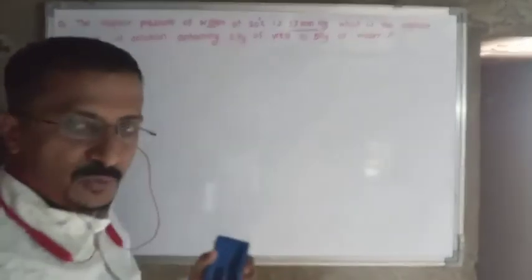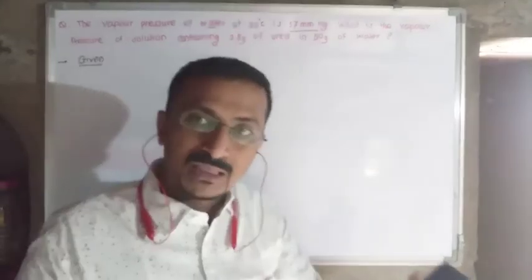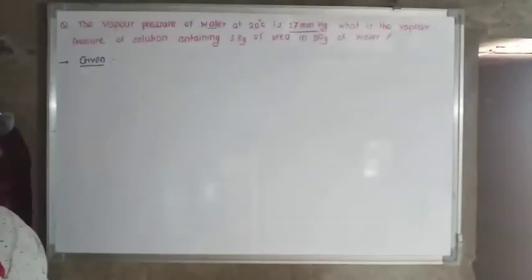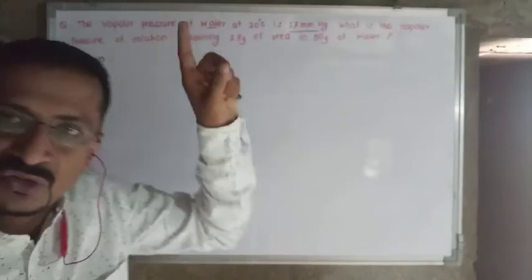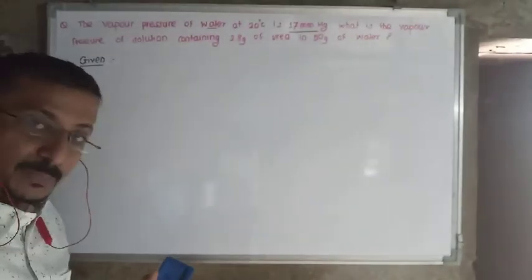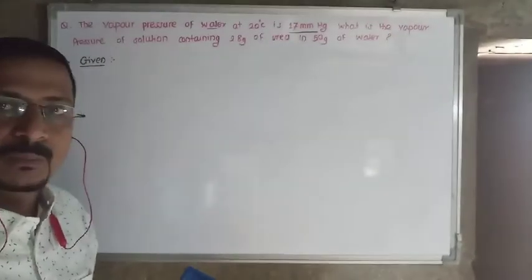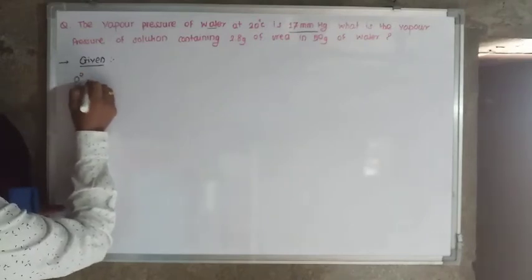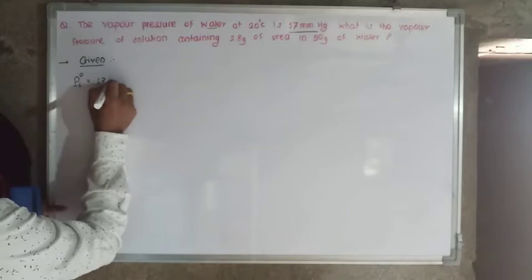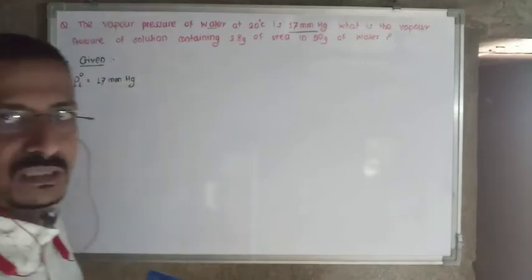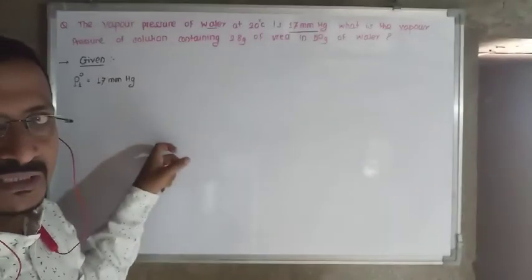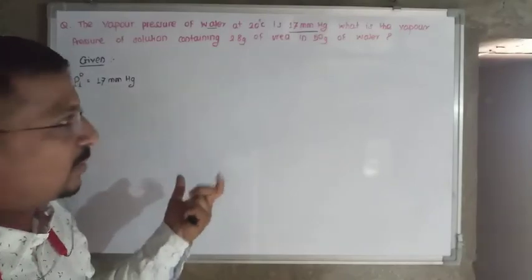We studied two types of vapor pressure — that of the solution and that of the solvent. Since water is mentioned here, water is the solvent. The vapor pressure of the solvent is represented by the symbol P naught or P1 naught. So in the given data, P1 naught is 17 mm of Hg. Temperature is also given — no problem if you mention it or not, as it is not necessary for solving this example.